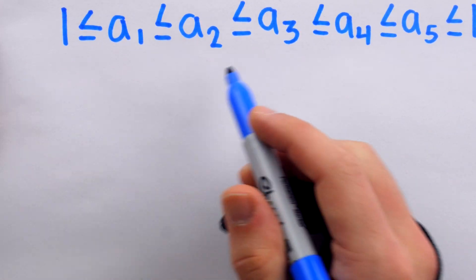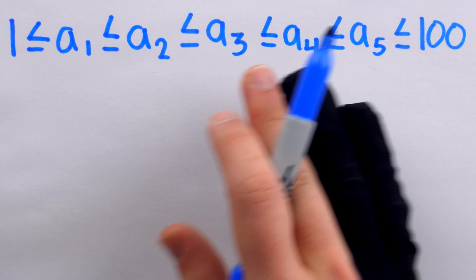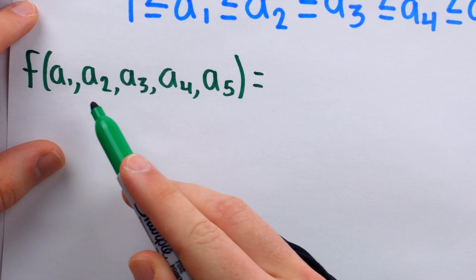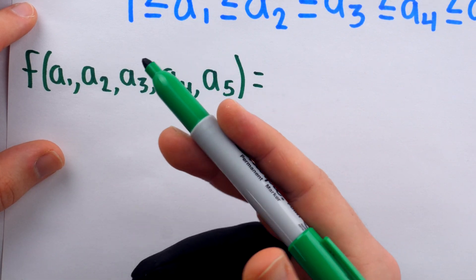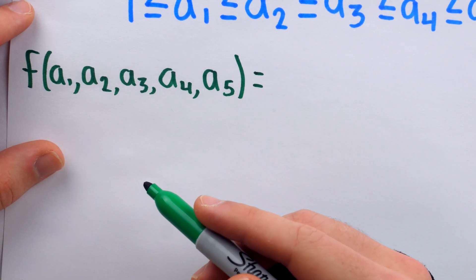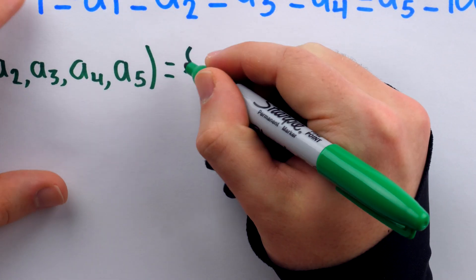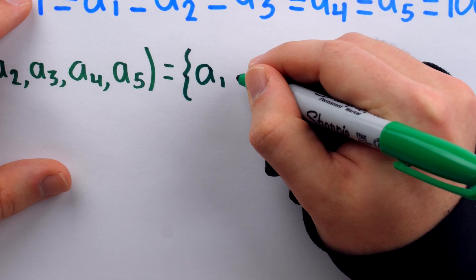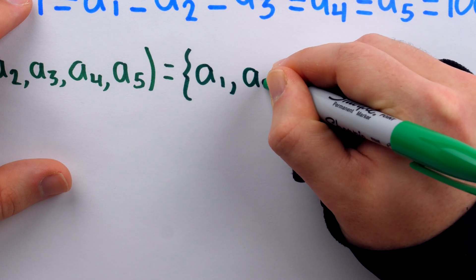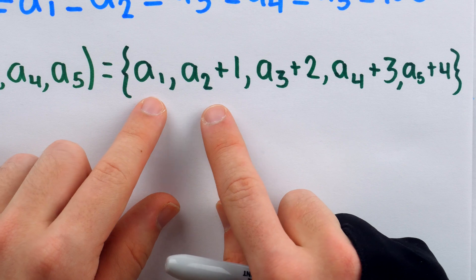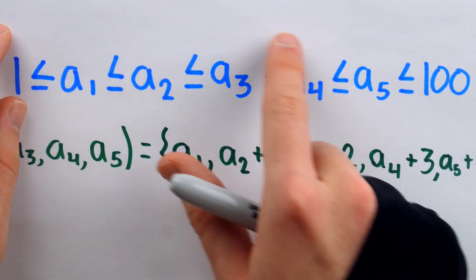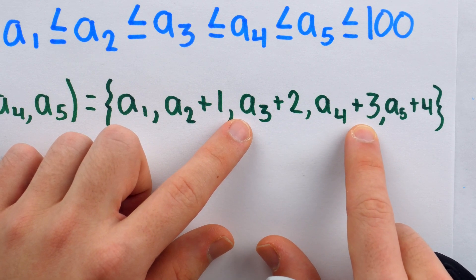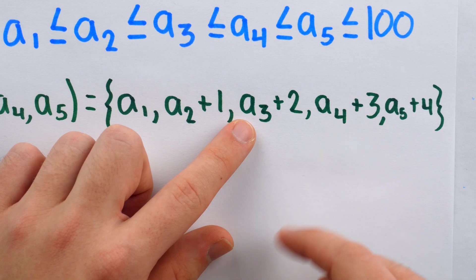What we're going to consider is a function which takes these five numbers on our lottery ticket and maps them to five other numbers that are distinct. If we take the five-tuple a1, a2, a3, a4, a5 arranged in order and put them through function f, then f maps them to the set {a1, a2+1, a3+2, a4+3, a5+4}. This set is not a multiset because all elements are guaranteed to be distinct. If any numbers were already distinct, adding distinct offsets keeps them distinct; if any were equal, adding distinct offsets makes them distinct.